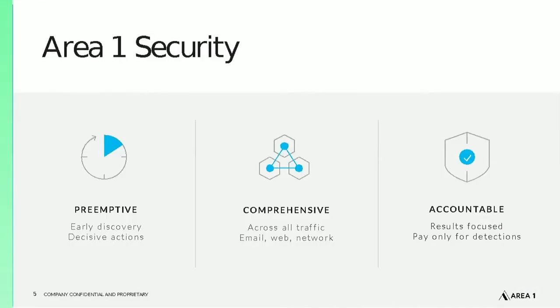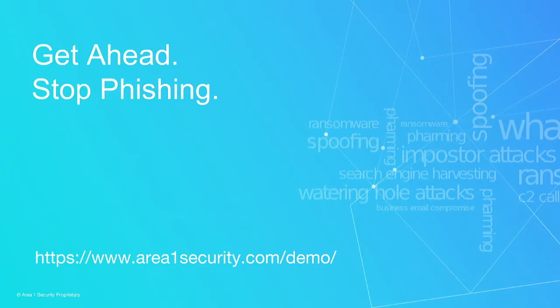Thanks for joining today's webinar. If you're concerned about phishing attacks evading your existing security defenses, Area One Security can help close the gap by adding a layer of defense that provides early visibility into phishing sites before they go live and prevents phish from reaching end users. The Area One Horizon Anti-Phishing Service deploys easily with legacy security technologies and cloud office suites, and detects and protects you effectively from email, web, and network phishing attacks that other defenses miss. For more information or a demo, please visit our website at area1security.com/demo. Thanks again for listening and have a great day.